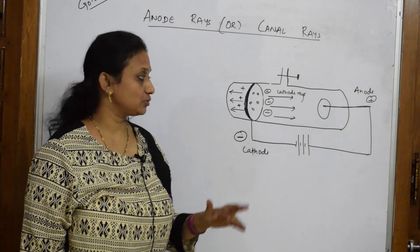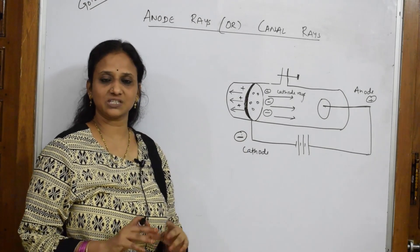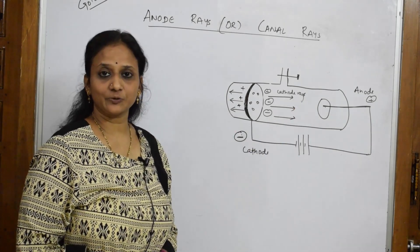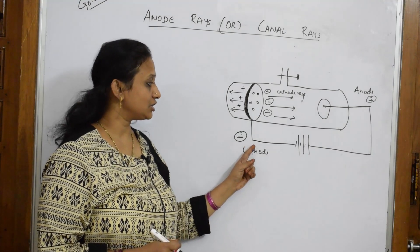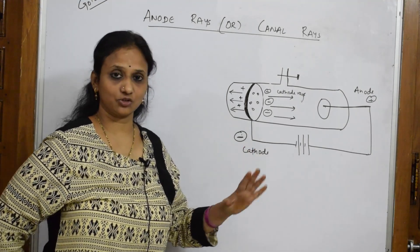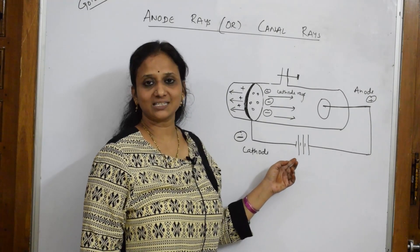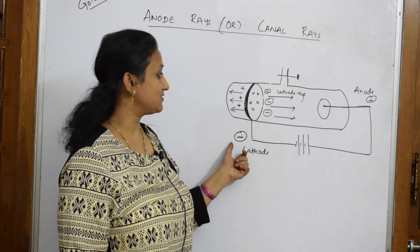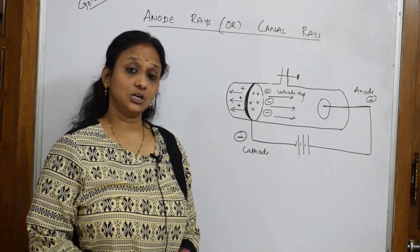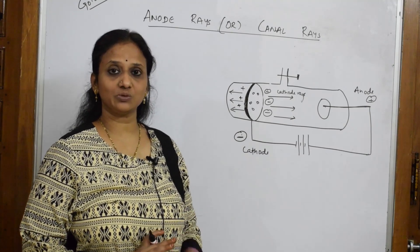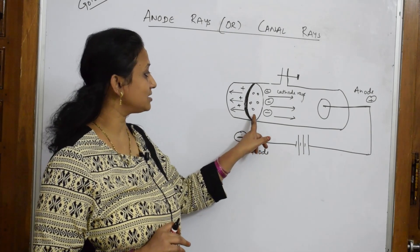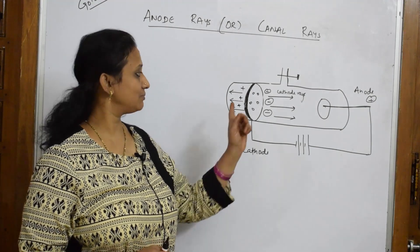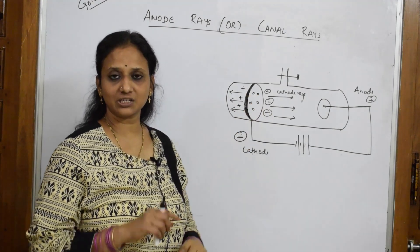According to Goldstein, he drew the same discharge tube as Julius Plucker's — gas at low pressure, connected to the external high voltage circuit, with two electrodes: a negatively charged cathode and a positively charged anode. The only difference is that here the cathode electrode is a perforated one — meaning it has certain holes present in it.